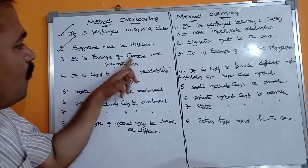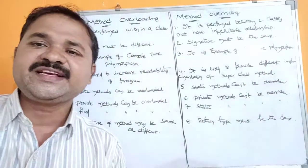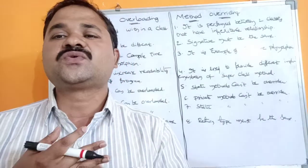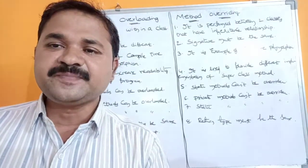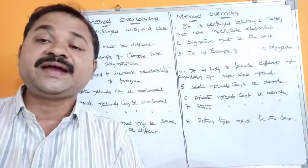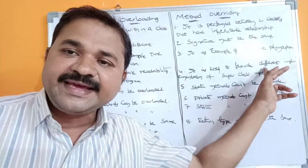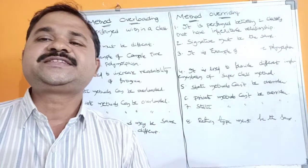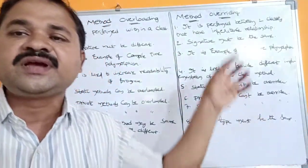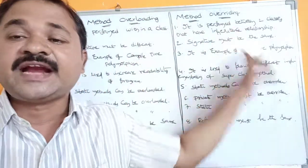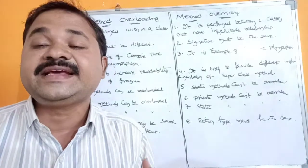The third point: method overloading is an example of compile-time polymorphism. Polymorphism — poly means many, morphism means forms — is representing one thing in many forms. Polymorphism is classified into two types: compile-time polymorphism and runtime polymorphism. Method overloading is an example of compile-time polymorphism, whereas method overriding is an example of runtime polymorphism. In compile-time polymorphism, the decision about which method will be called is made during compilation, whereas in runtime polymorphism, that decision is made during execution time.